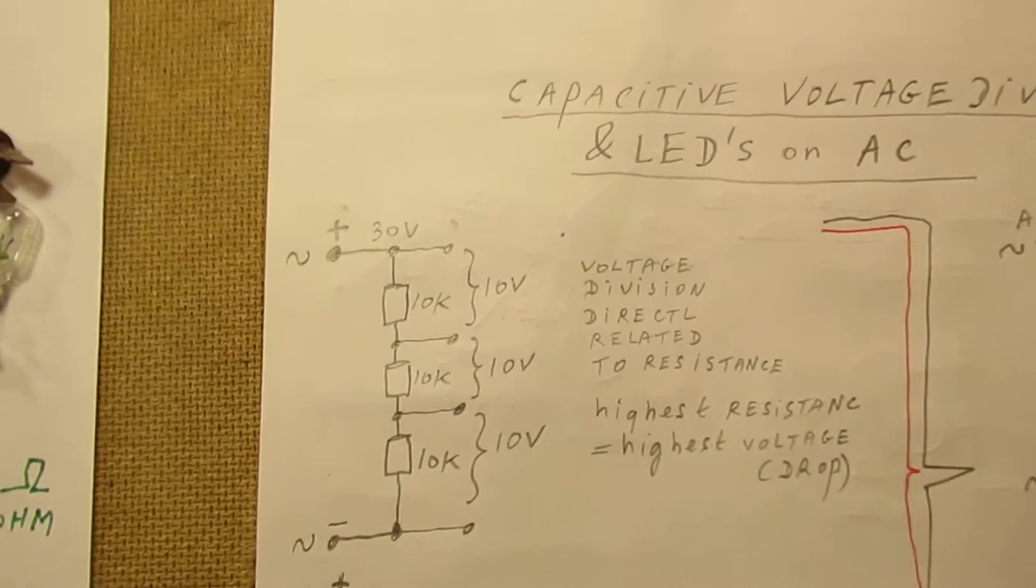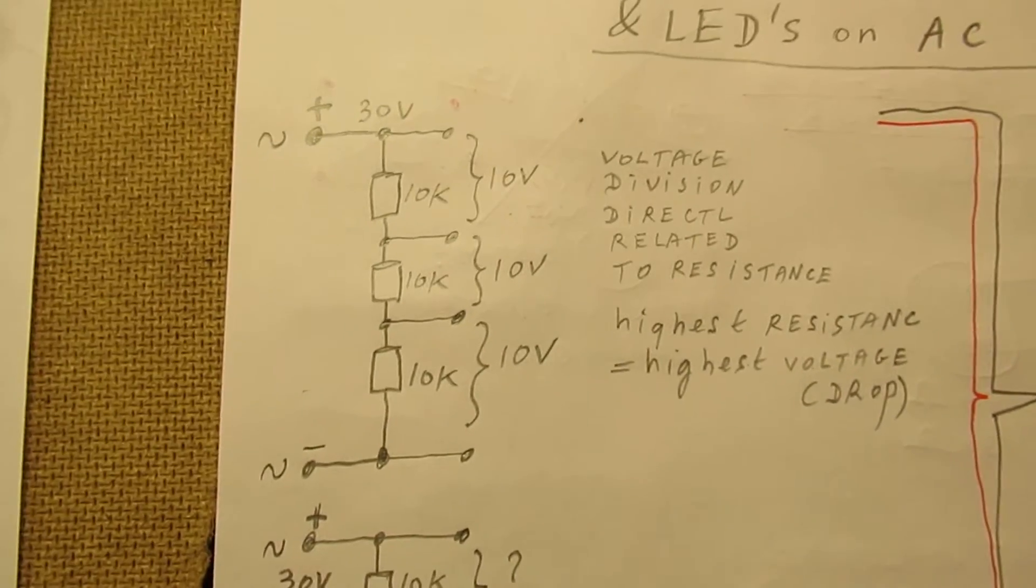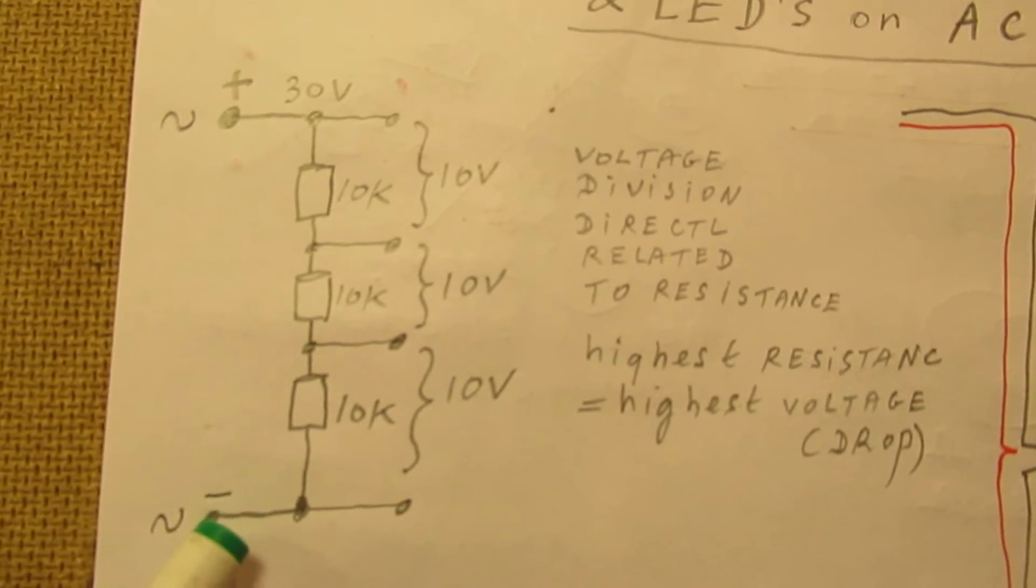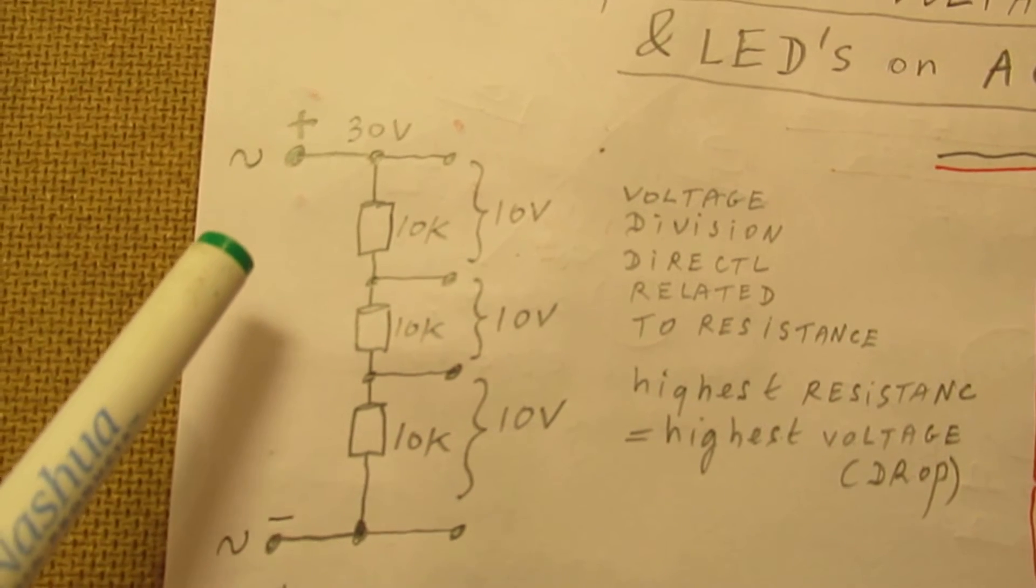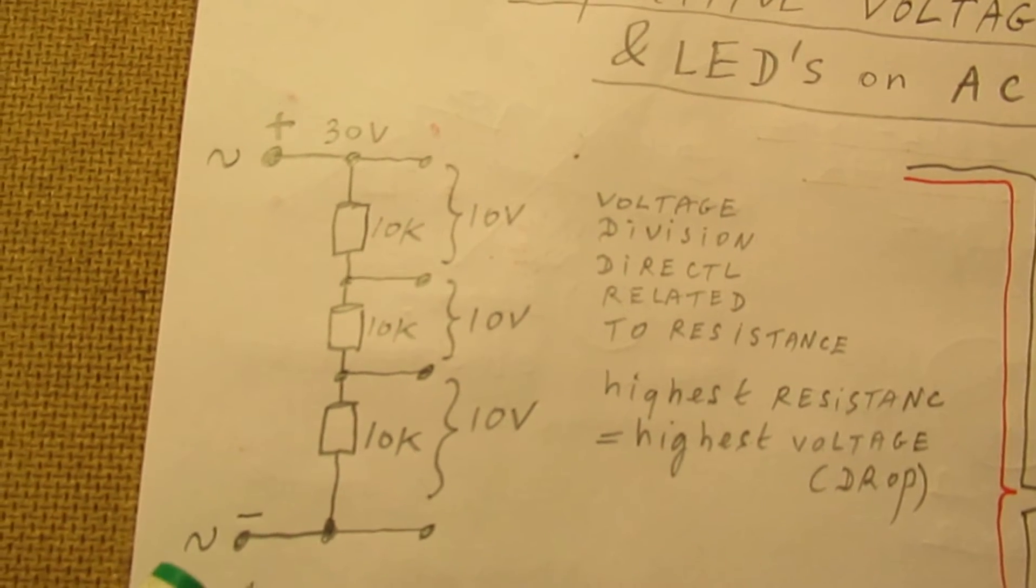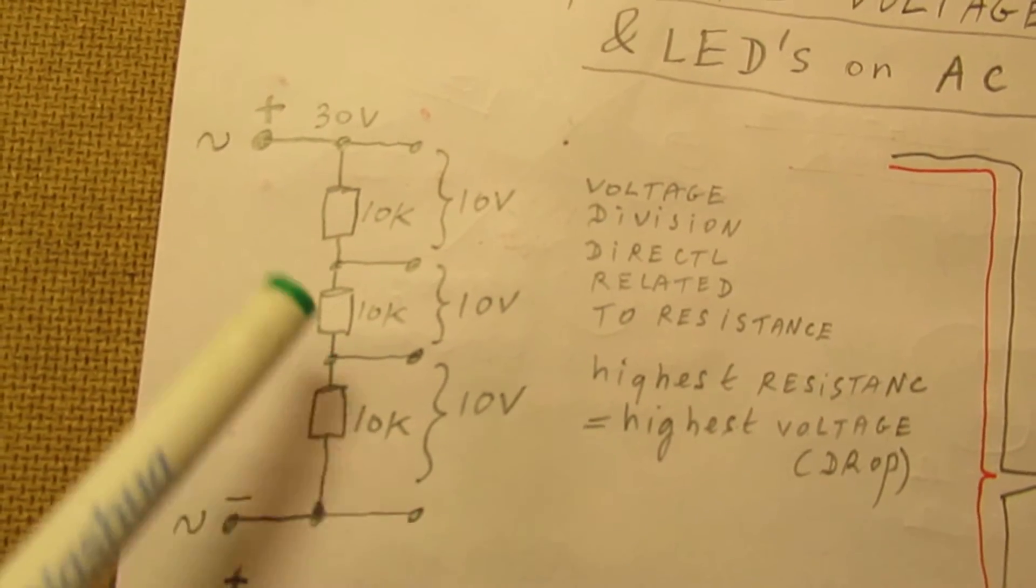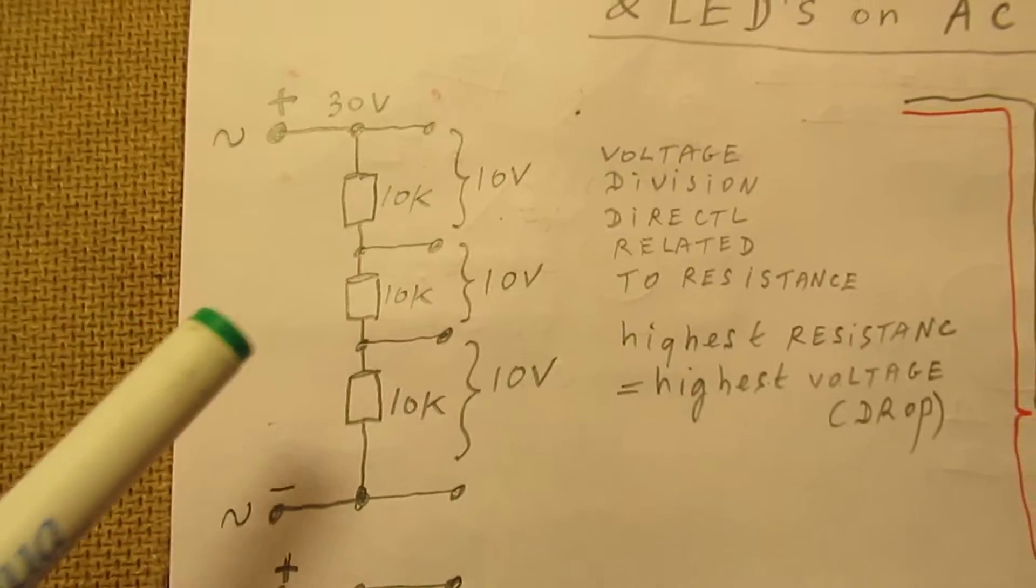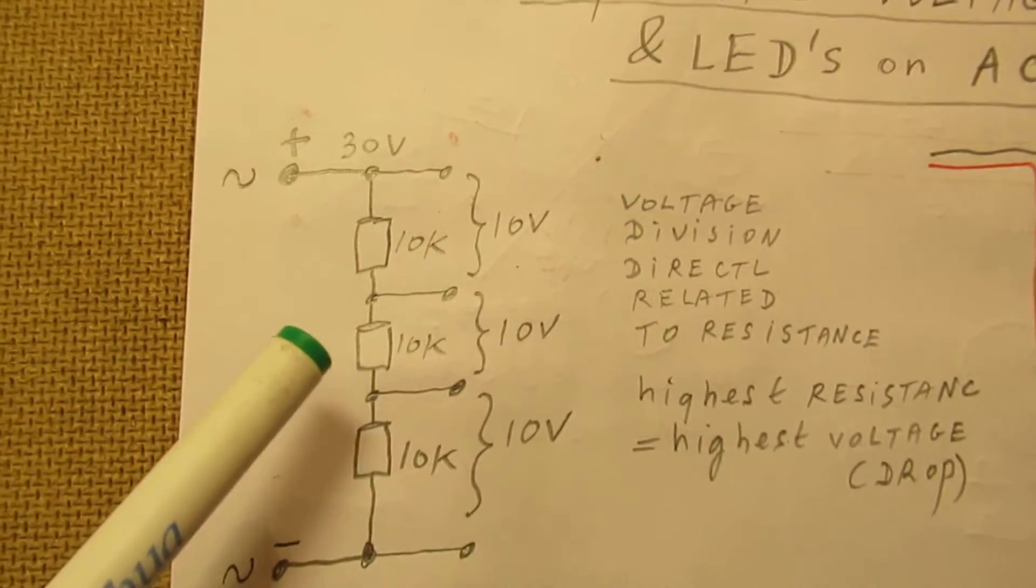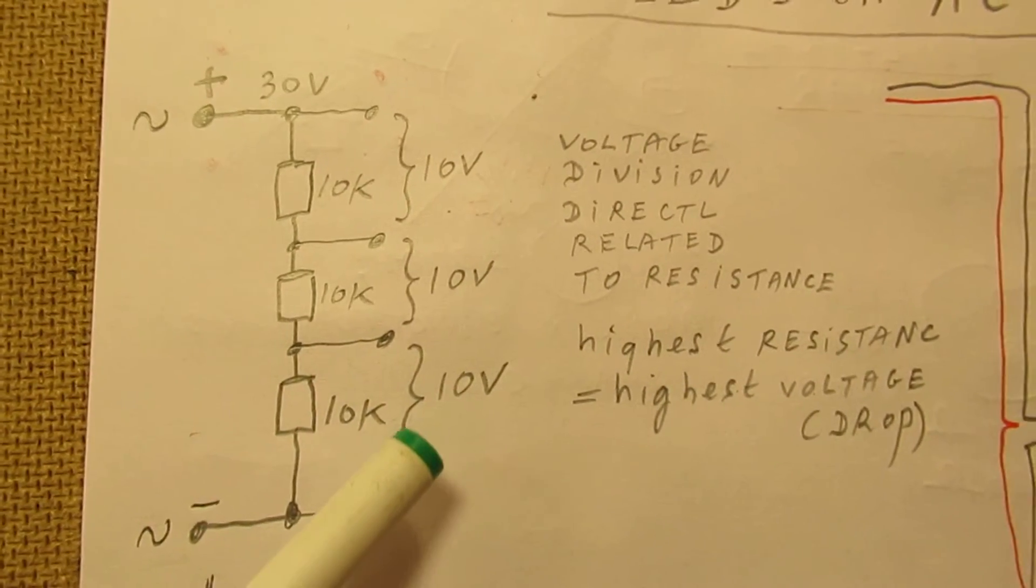The voltage divider is very well known in electronics, and that's the key issue here. When we have three resistors in series and connect them to a voltage source, be it AC or DC, the voltage divides in direct relation to the resistance. When all the resistances are the same and you have 30 volts here, you will find one third of that voltage at each point, so everywhere 10 volts.